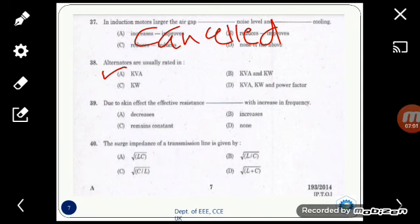The next one is: the surge impedance of a transmission line is given by? Equation B, that is √(L/C). So I hope all of you understand the questions and answers very well. Thank you.